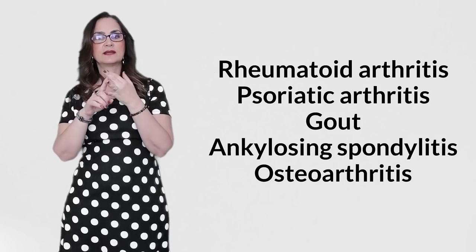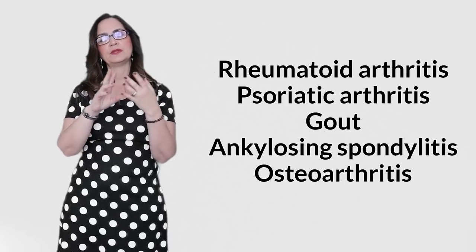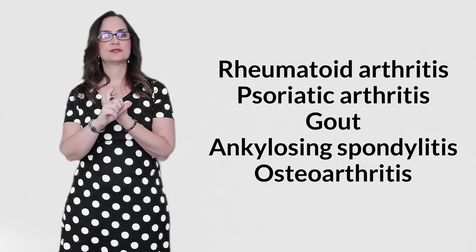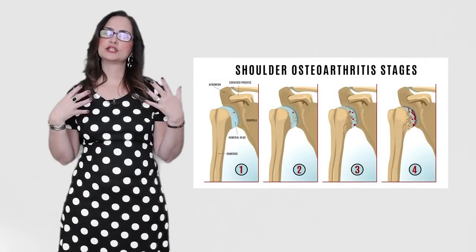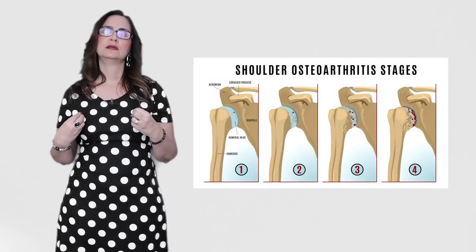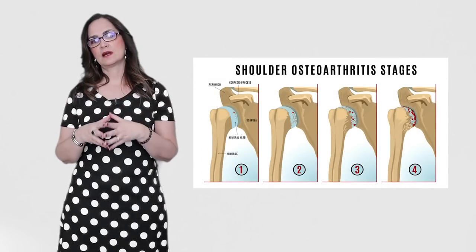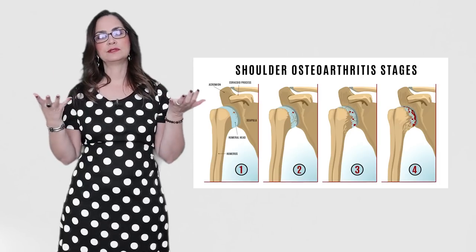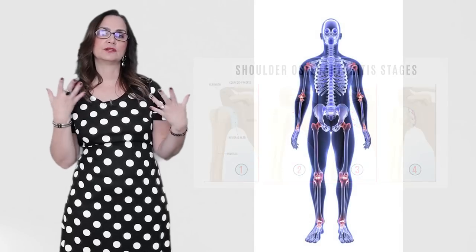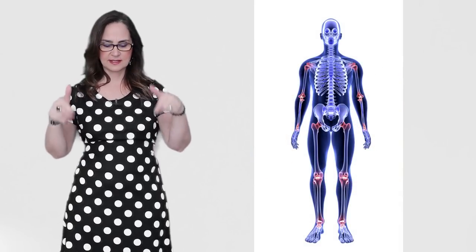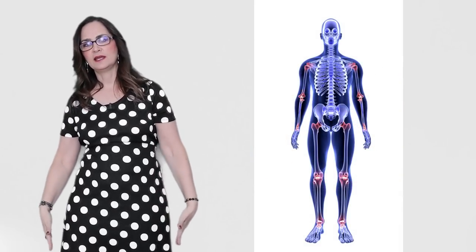Examples of diseases that cause arthritis are rheumatoid arthritis, psoriatic arthritis, gout, ankylosing spondylitis and osteoarthritis. Osteoarthritis is a type of slow, low grade inflammation and it causes damage to the cartilage over a prolonged period. It may affect other joints of the body like hands, feet, knees, ankles, neck and the lower back.